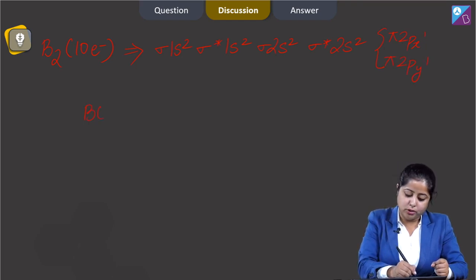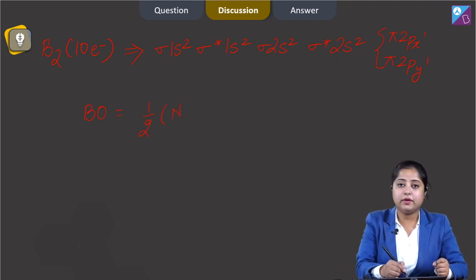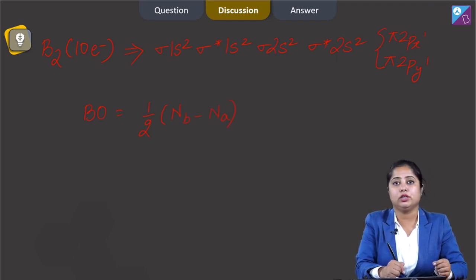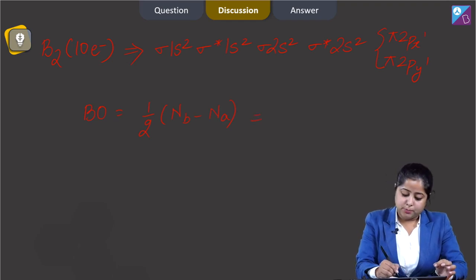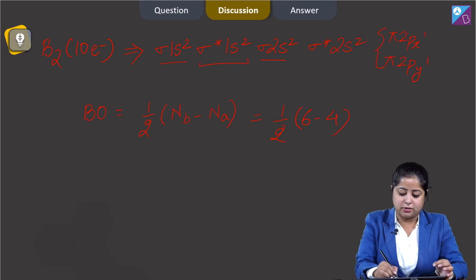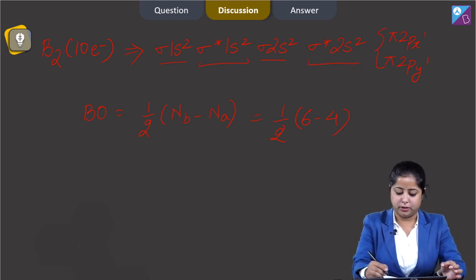We have to calculate the bond order. Bond order equals half of (number of electrons in bonding molecular orbital minus number of electrons in antibonding molecular orbital). The number of electrons in bonding is 2+4+6=6, minus 4 in antibonding, which equals 1.